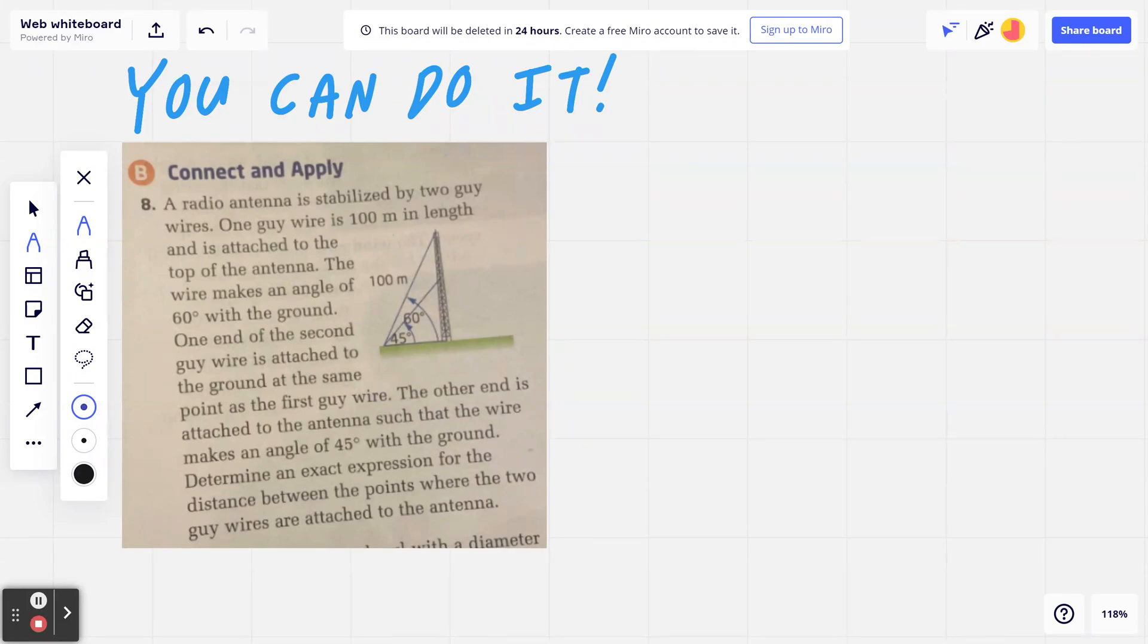Number eight, a radio antenna is stabilized by two guide wires. One guide wire is 100 meters in length and is attached to the top of the antenna.